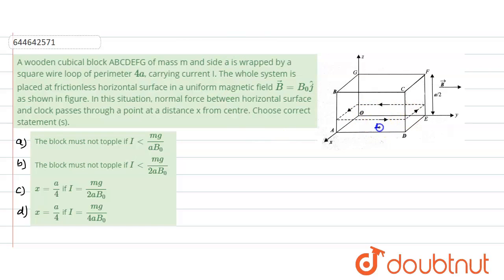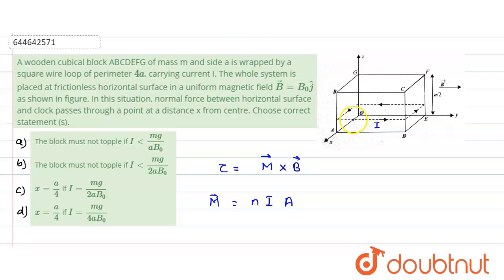First, the direction of the current — if we see from the top it would be in the counterclockwise direction. The torque value is given as m cross B. The value of m is n (number of turns) into i (current) into area. The direction of m is the direction of the area vector, which is perpendicular to the current-carrying loop — either k̂ or −k̂. Using the right-hand thumb rule, curling fingers in the direction of current gives the area vector in the k̂ direction. So the magnetic moment vector direction is k̂.